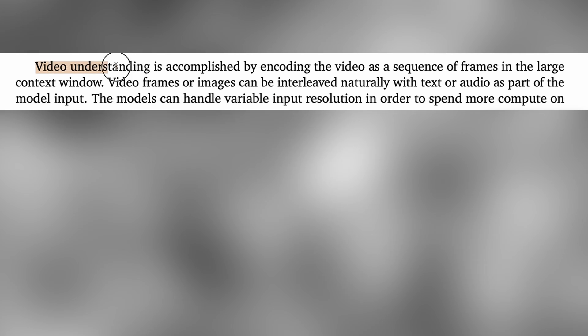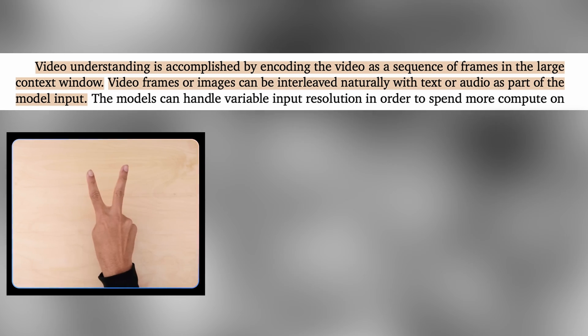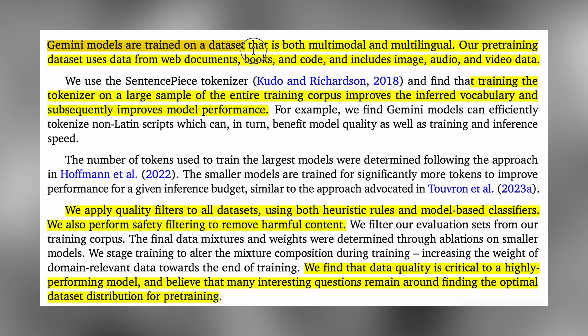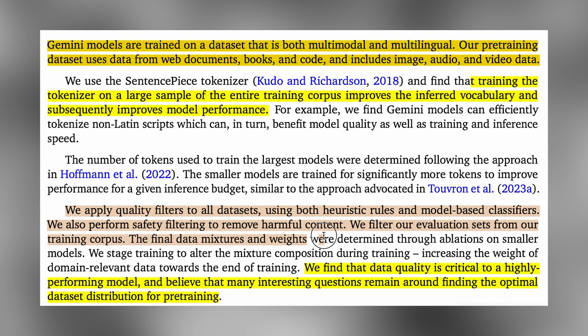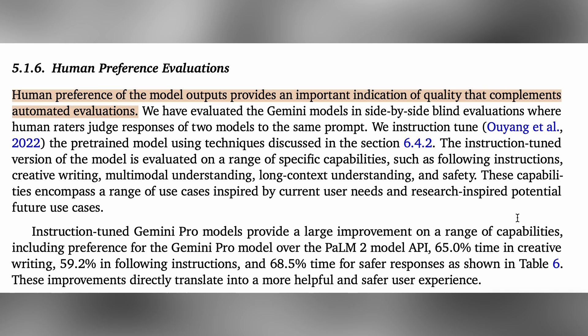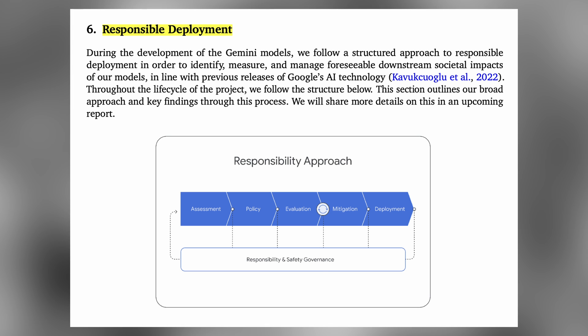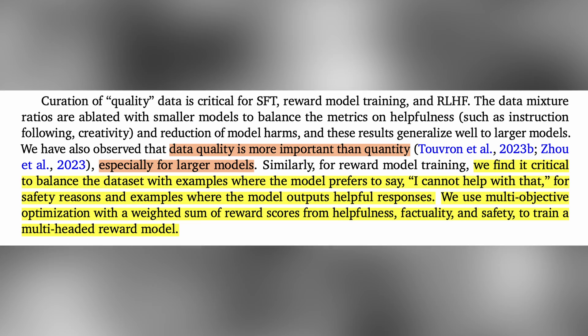This method can also be augmented to support video inputs — the Gemini paper states that video understanding is accomplished by encoding the video as a sequence of frames, with each frame having its own image tokens and likely a separator between frames. For Gemini's training, DeepMind trained on millions — perhaps billions — of examples of raw multimodal data from the web, applying quality filters using heuristic rules and model-based classifiers, and safety filtering. After pre-training on next-token prediction, they used supervised fine-tuning and reinforcement learning with human feedback, noting that data quality is more important than quantity for instruction tuning.